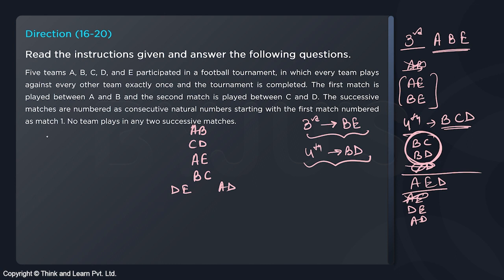Let's go with D,E as match five. Now for match six, the available teams are A, B, and C. A and B have already played, and B and C have already played. So the next match is forced: it must be A and C. That gives us six matches so far — match six is A,C.